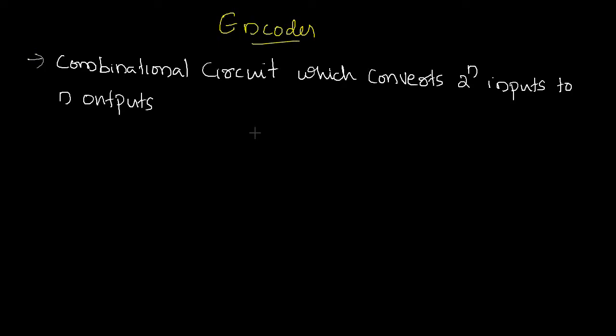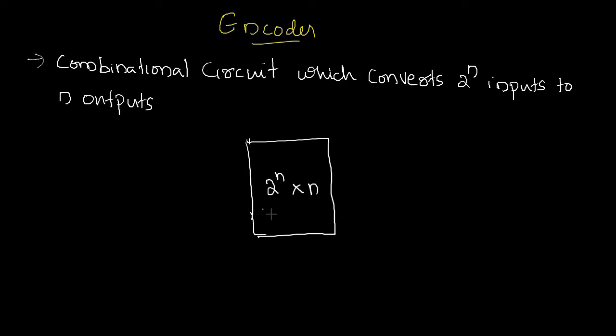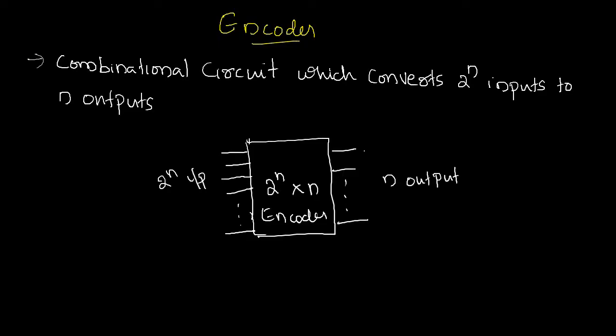What is the purpose of using an encoder? An encoder is used to convert 2 raised to n inputs to n outputs. We can define an encoder as a combinational circuit which converts 2 raised to n inputs to n outputs. We can draw the block diagram of a 2-raised-to-n by n encoder, which has 2 raised to n input lines and n output lines.